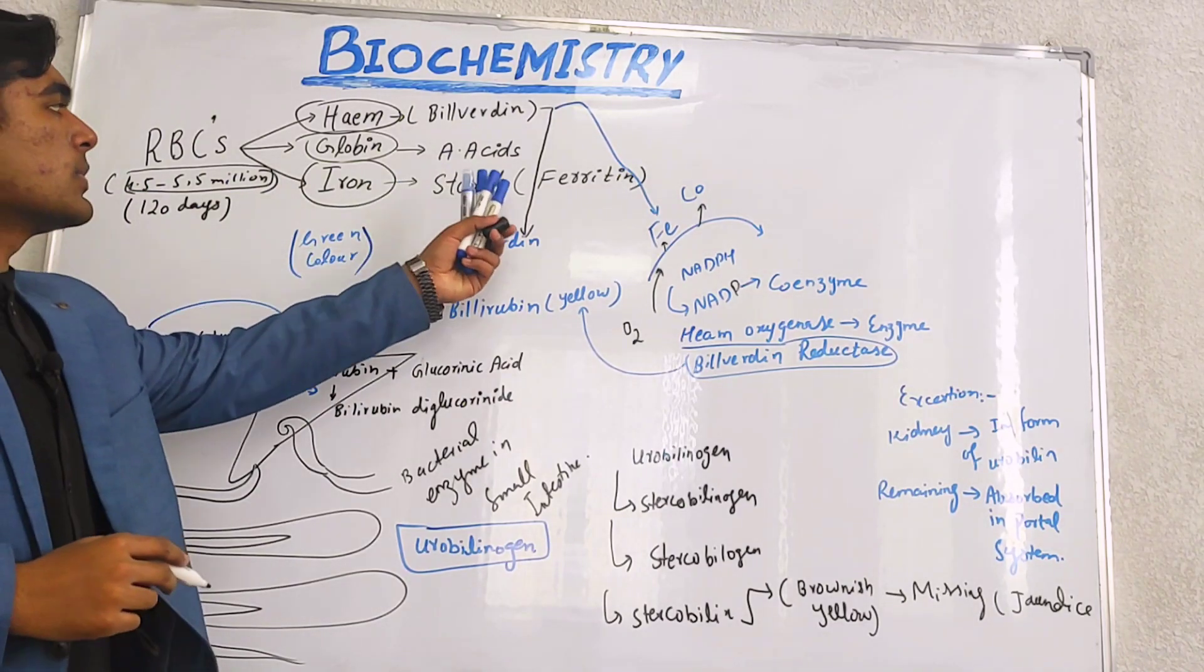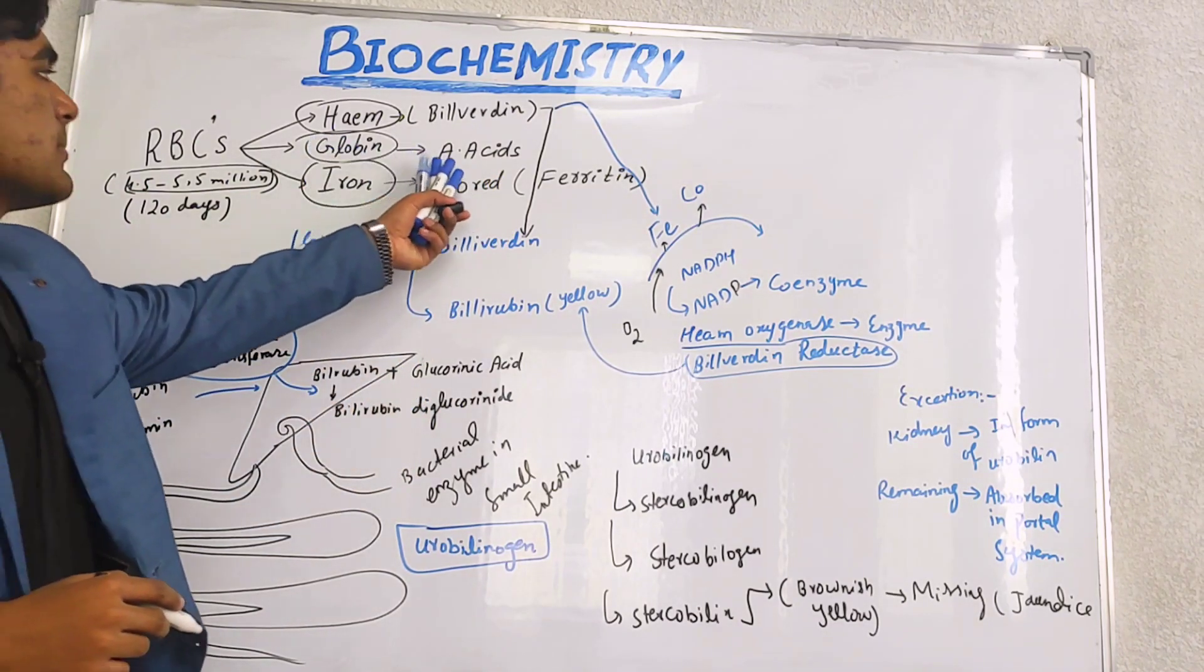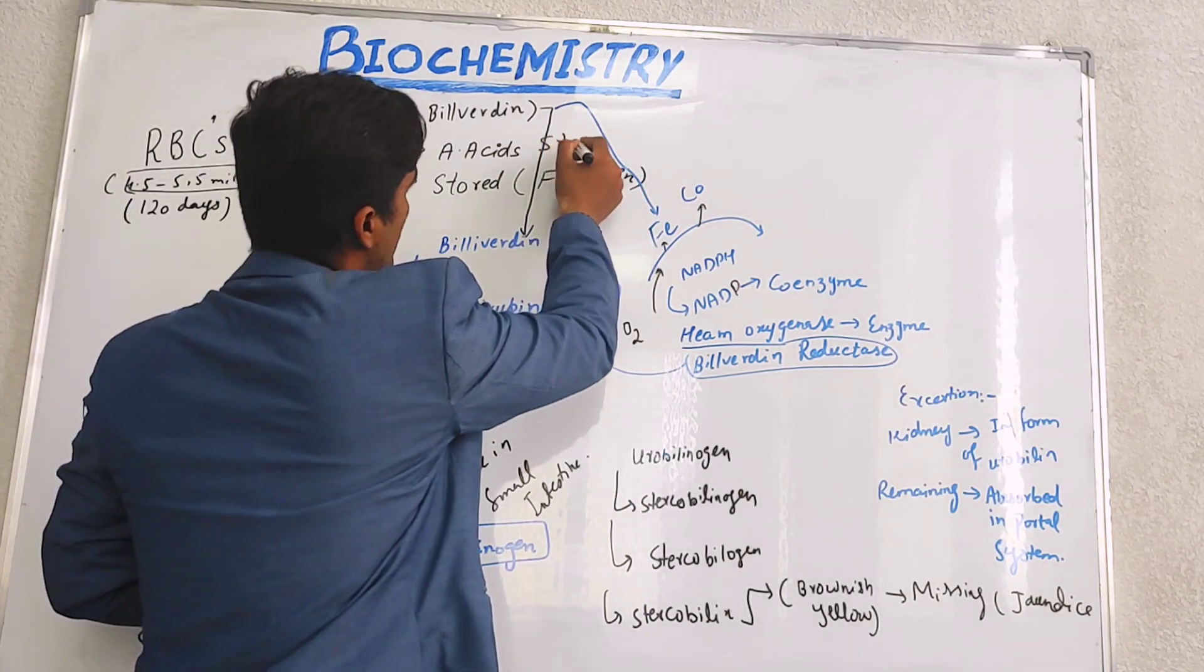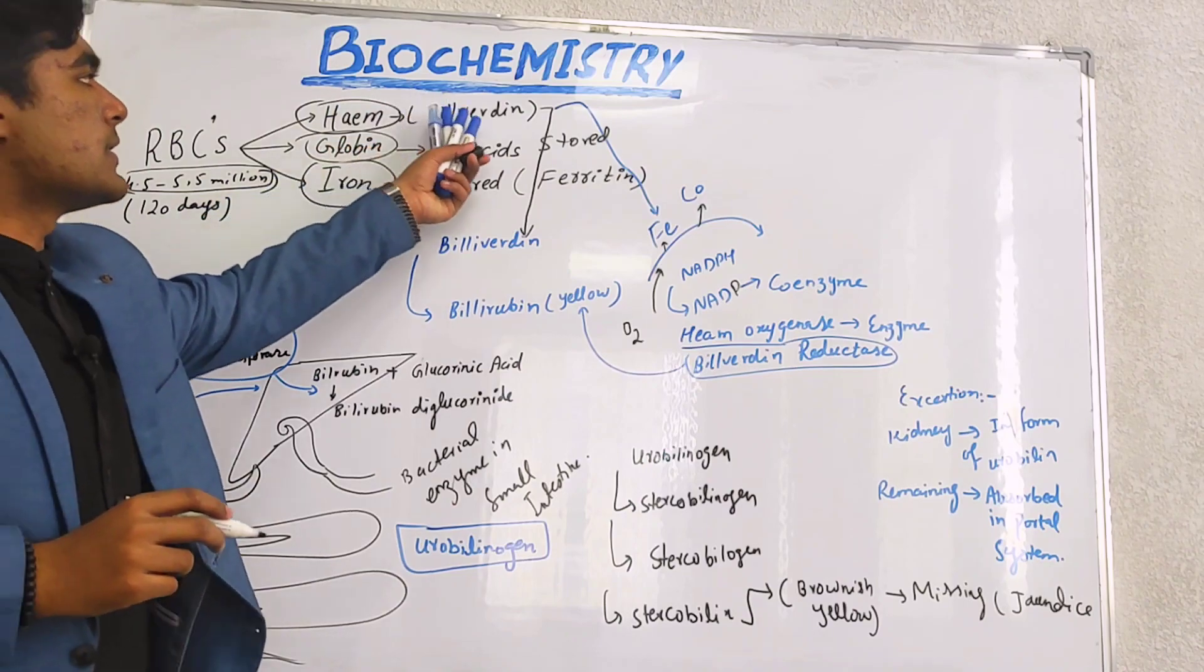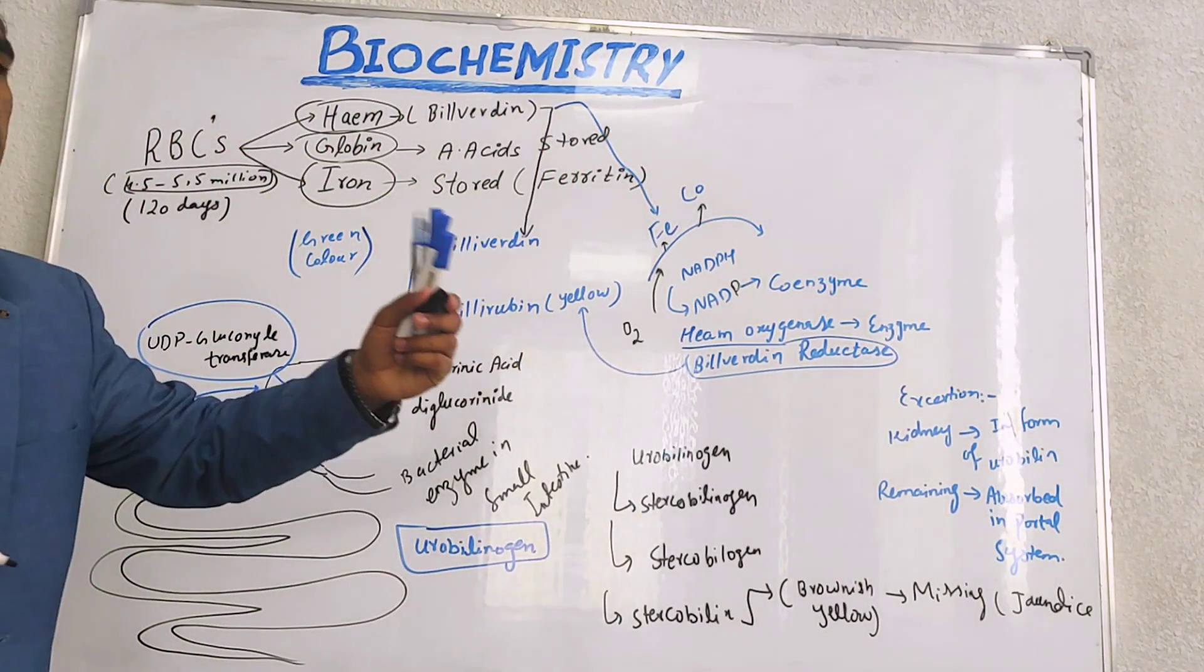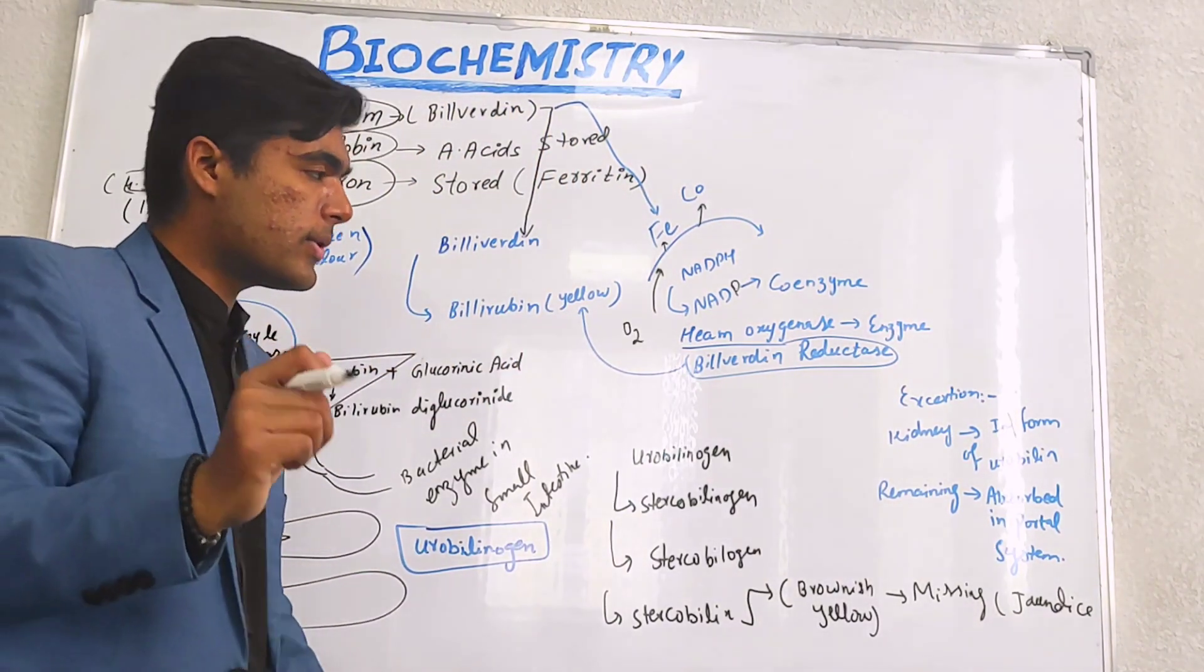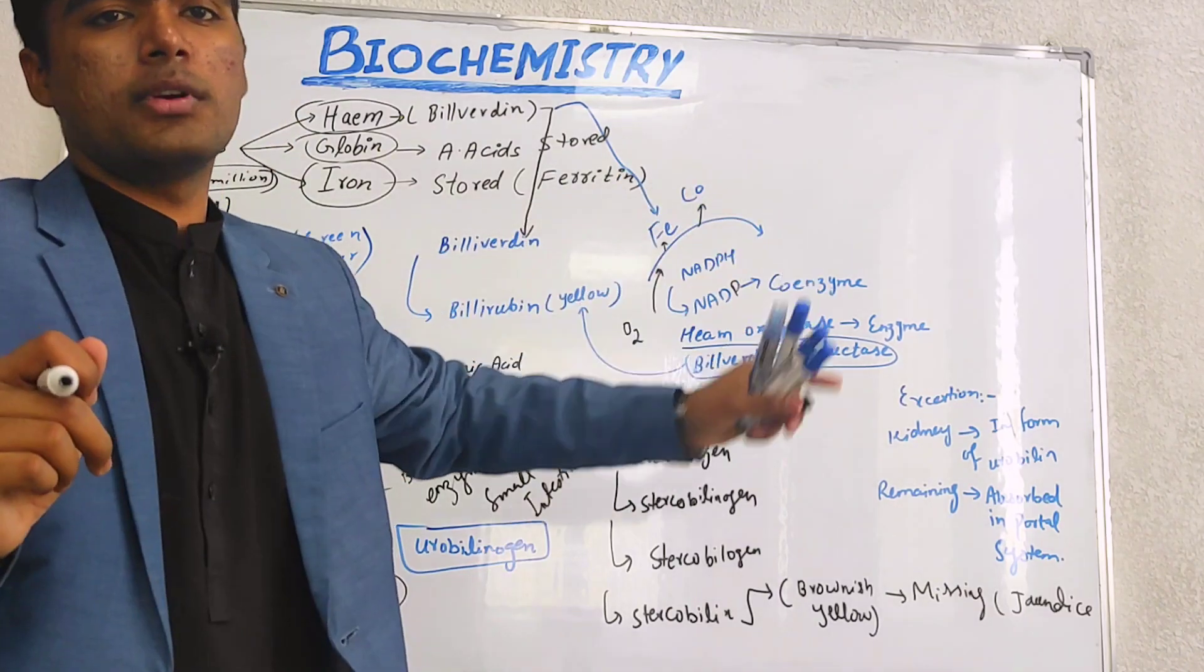Iron is basically stored in the body, globin is an amino acid and it is also stored in the body, and this heme is going to be converted into bilirubin. We are going to discuss in particular how it is going to be converted.